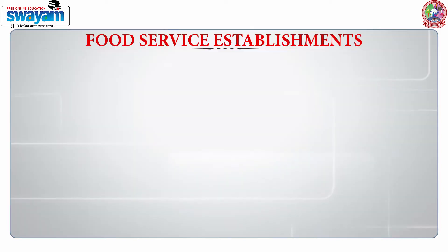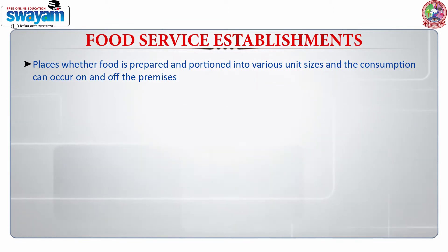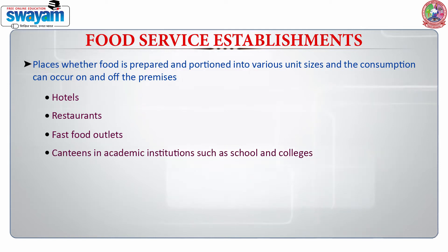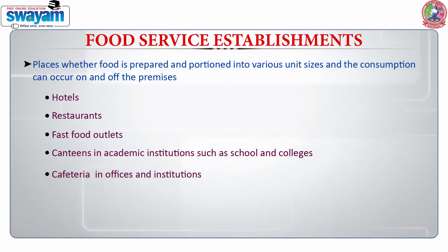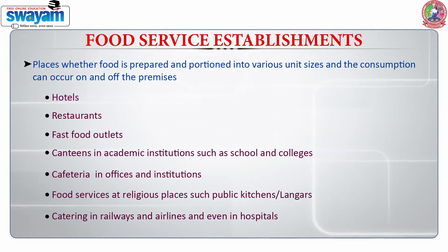When we talk about food service establishments, these are the places where food is prepared and portioned into various unit sizes, and consumption can occur on and off the premises. These can be hotels, restaurants, fast food outlets, canteens in colleges, schools, and cafeterias in offices and institutions. We cannot forget religious places in India which run large public kitchens or langars. We can also include catering in railways, airlines, and even in hospitals.